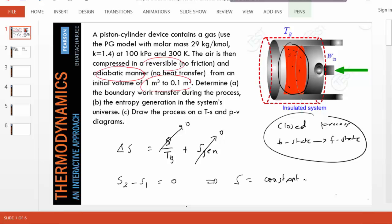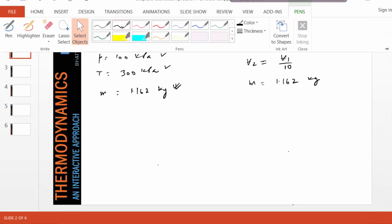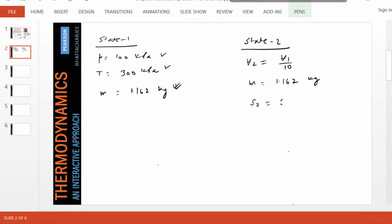Both total entropy and because mass doesn't change, small s is also a constant, right? Which is capital S divided by m. So therefore, we can use s two equals s one and use isentropic relationship.